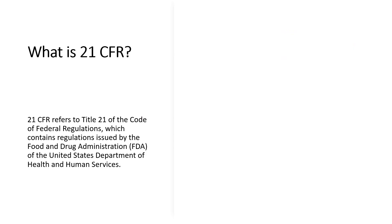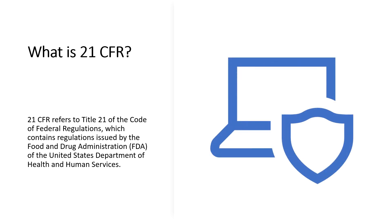In this slide, we will discuss what is 21 CFR. So 21 CFR refers to Title 21 of the Code of Federal Regulations, which contains regulations issued by the Food and Drug Administration — FDA — of the United States Department of Health and Human Services. 21 CFR is basically a kind of law for the United States, similar to the IPC — Indian Penal Code — in India.